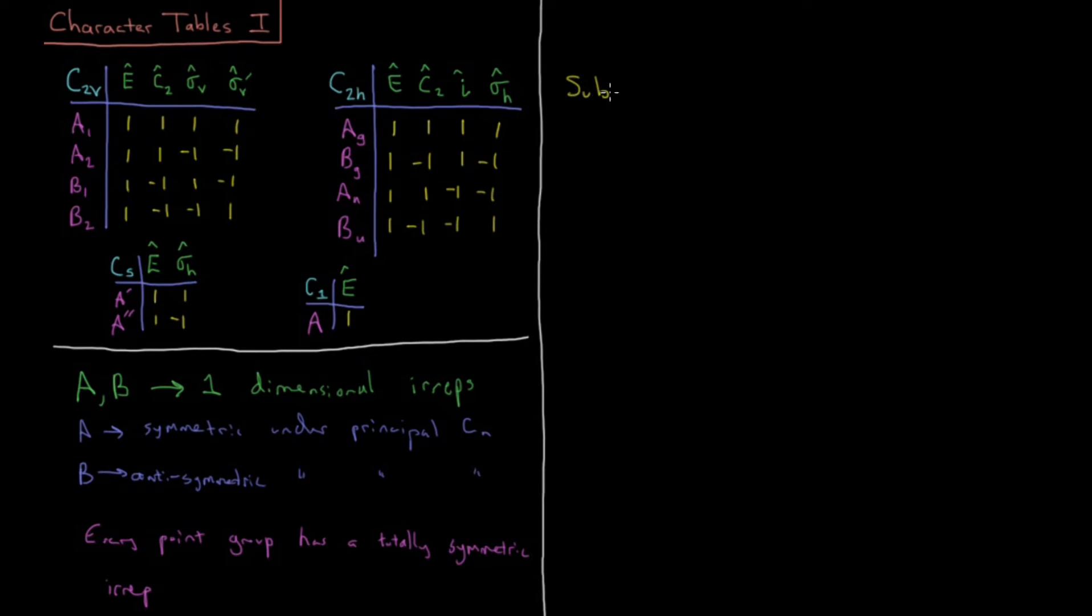So next thing to bring up is this subscript 1, 2, etc. The 1 is going to indicate symmetry with respect to, depends on the particular point group, but it might be sigma V or it might be C2 which is not principal. So this might be a C2 prime if your C2 is a principal axis. It might be a C2 if your principal axis is C3, C6, etc.